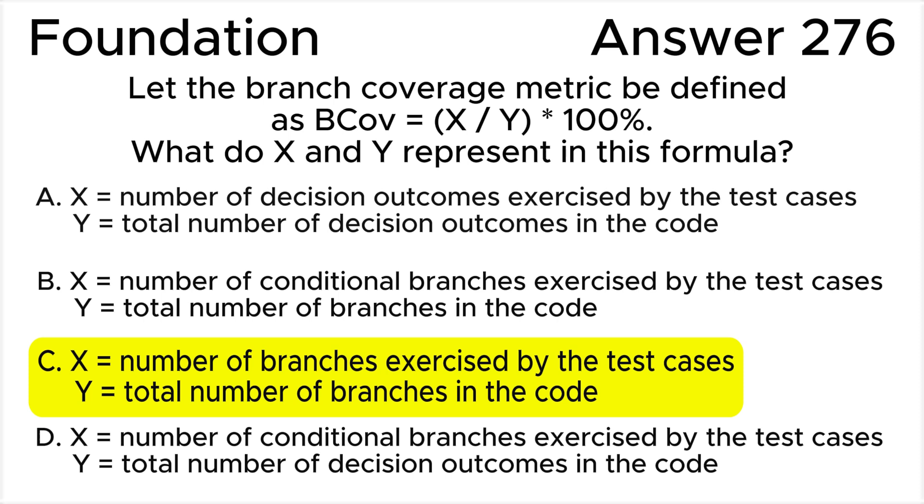All the rest of the answers are wrong. Answer A is not correct because a decision outcome is a conditional branch, but for branch testing X counts not only conditional but also unconditional branches. Answer B is not correct because branch coverage counts not only conditional but also unconditional branches. Answer D is not correct because both X and Y count only conditional branches and do not take into account unconditional branches.